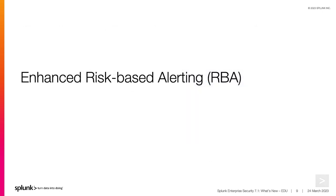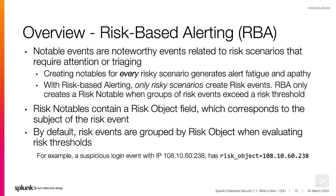Our next topic is Enhanced Risk-Based Alerting, or RBA. Notable events are noteworthy events related to risk scenarios that require attention or triaging. Creating a notable event for every risky scenario generates alert fatigue and apathy. But with risk-based alerting, only a risky scenario will create a risk event. RBA only creates a risk notable when groups of risk events exceed a risk threshold. Risk notables contain a risk object field, which corresponds to the subject of the risk event. By default, risk events are grouped by risk object when evaluating for risk thresholds.